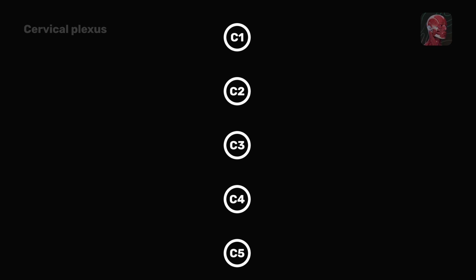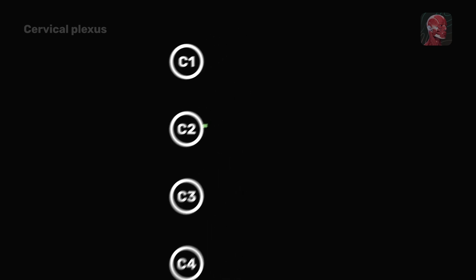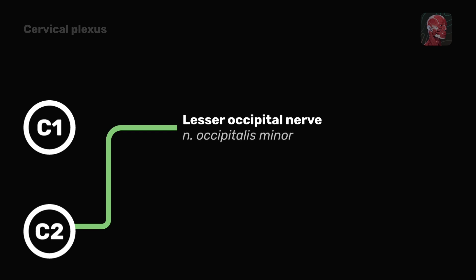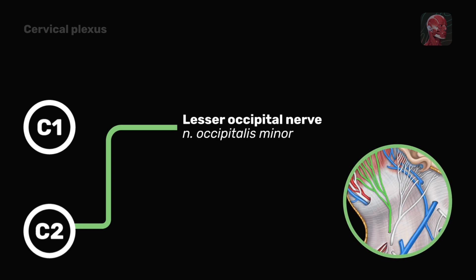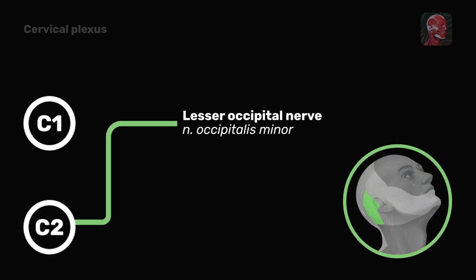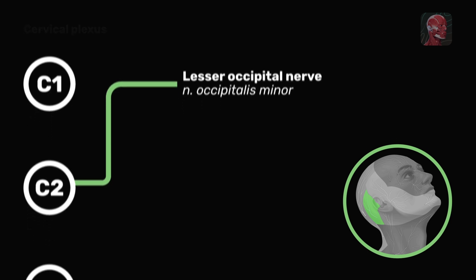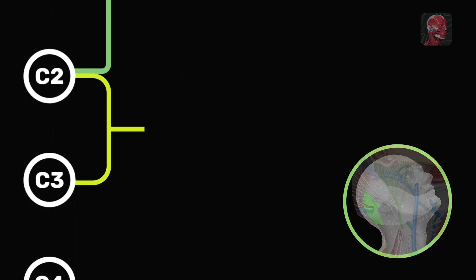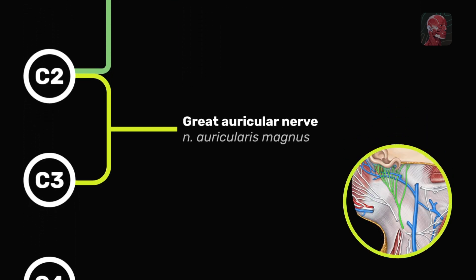Let us start with the sensory branches. The loop between C2 and C3 gives off the lesser occipital nerve, which contains fibers from C2, and innervates the skin of the neck and the skin of the scalp posterior superior to the auricle.